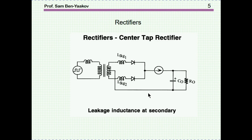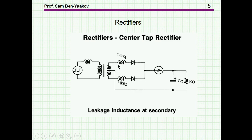In fact, you'll have it also in an isolated topology, like a full-bridge PWM converter, and I'm showing here a half-bridge rectifier. In this case, if the upper diode is conducting in the forward direction, but then as this voltage here is reversed, we'll have a reverse voltage on this loop, and consequently the forward current will decrease and eventually you'll have a reverse current. So this phenomenon is really widespread and you'll find it in many situations.